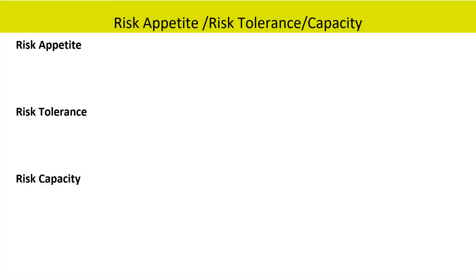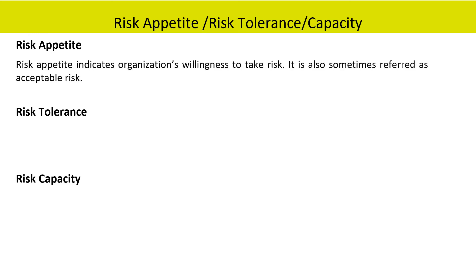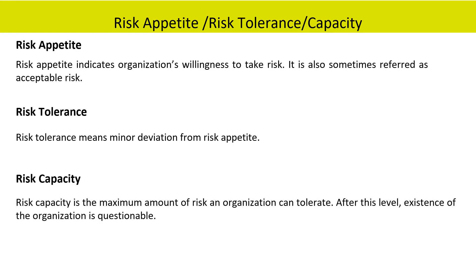Risk aspirants need to understand these three very important terms: risk appetite, risk tolerance, and risk capacity. Risk appetite indicates an organization's willingness to take risk, and is also sometimes referred to as acceptable risk. Risk tolerance means a minor deviation from risk appetite. Risk capacity is the maximum amount of risk an organization can tolerate; after this level, the existence of the organization is questionable.